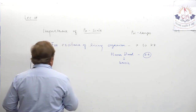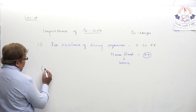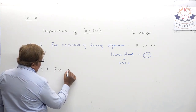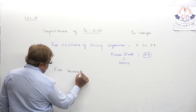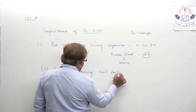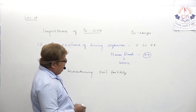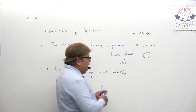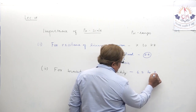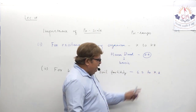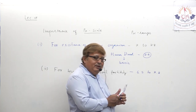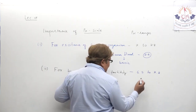Let us mention another aspect which is important for pH: maintaining soil fertility. The pH range for soil is 6.5 to 7.3. This is quite a remarkable range — 6.5 is somewhat acidic, 7.3 means somewhat basic. The soil has to be a little acidic and at the same time a little basic, meaning its pH has to be in this range.